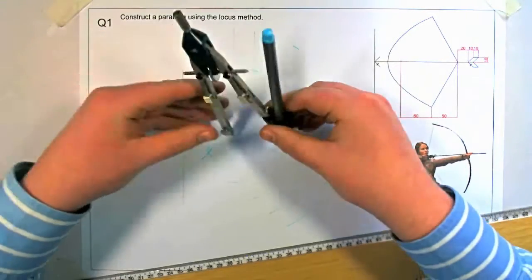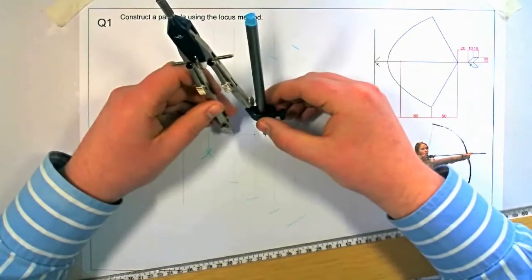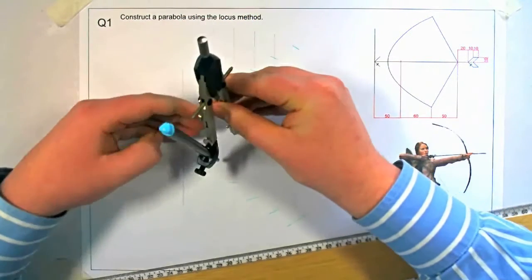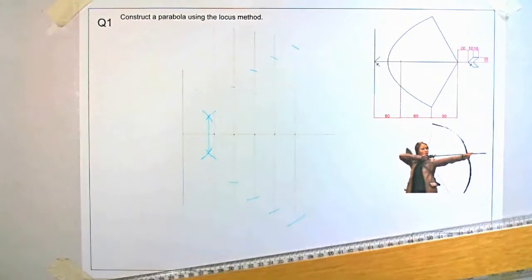Once more, ensure to measure from the directrix to the division line. Place the point of the compass on the focal point. And then swing an arc onto the relevant division line.